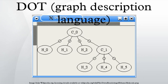DOT is a plain text graph description language. It is a simple way of describing graphs that both humans and computer programs can use. DOT graphs are typically files that end with a GV extension.